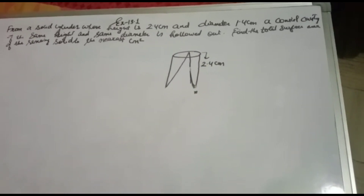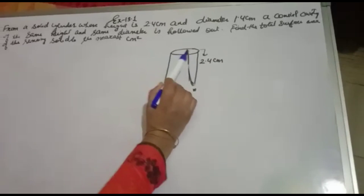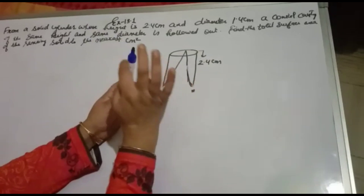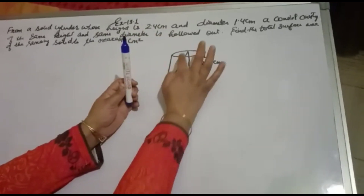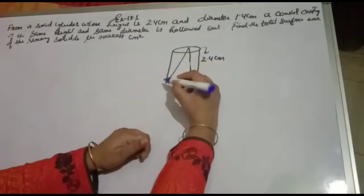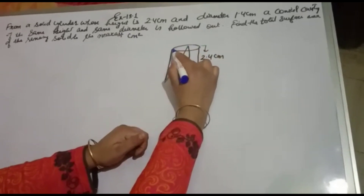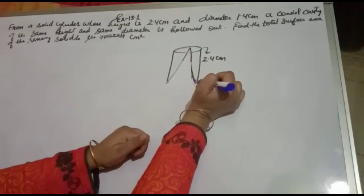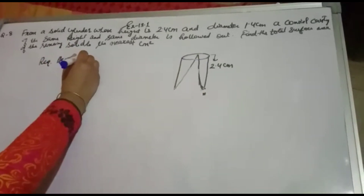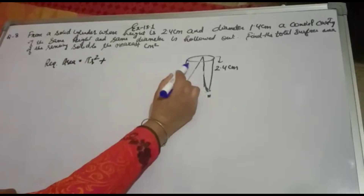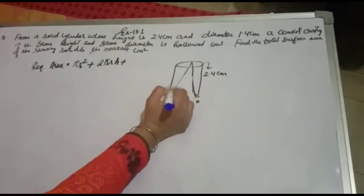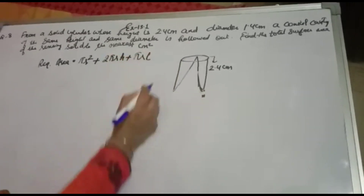You have to find the area of this solid figure. It is a cylinder, so you need the curved surface area of the cylinder, plus the area of the top circle, plus the lateral surface area of the cone. So the required area will be: area of the top (πr²) plus curved surface area of cylinder (2πrh) plus curved surface area of the cone (πrl).